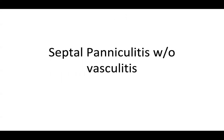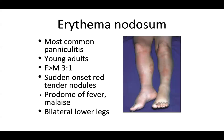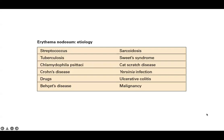Erythema nodosum is the most common paniculitis overall. Usually seen in young adults, it affects females more than males at a ratio of three to one, with sudden-onset red tender nodules. You'll often have a prodrome of fever and malaise, and it often presents on the bilateral lower legs.